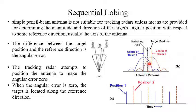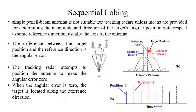In sequential lobing, this is the center of beam 1 and this is the center of beam 2. The switching axis is this direction. We are assuming the target position is here. Let us see how it will work when the target position and the switching axis have a certain angle between them. This angular distance is the angular error. The job of this sequential lobing radar is to minimize this error to zero. When the radar tracks the target, this angular error will be zero — that is the objective.